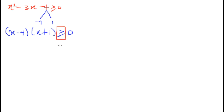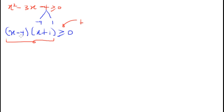The meaning of greater than or equal to zero is that we need values that will yield positivity. We need to find the range of values of x from each factor such that their product will be greater than or equal to zero — that is, their product must be positive.